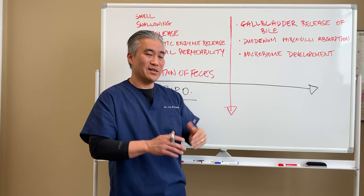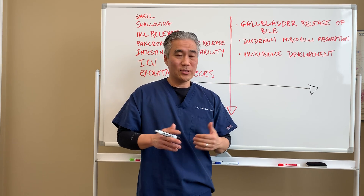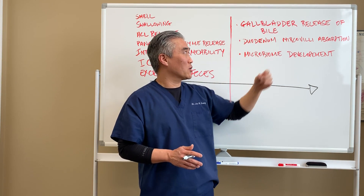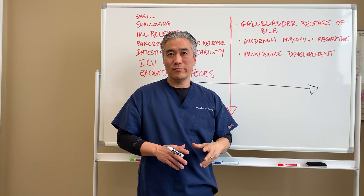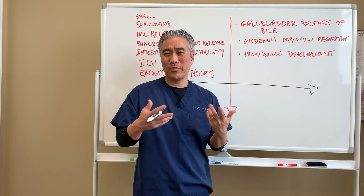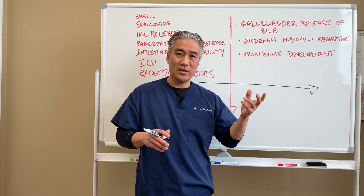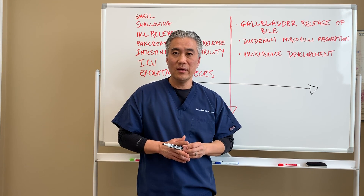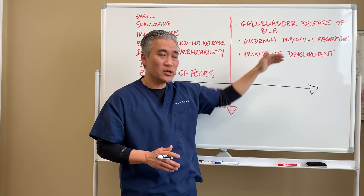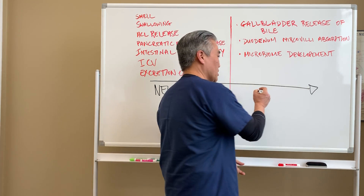Consider a patient with insulin resistance and diabetes who eats very poorly. They have poor gut microbiome and atrophied microvilli. They burp up fish oil and can't absorb it. Despite taking 5,000 units of vitamin D, their vitamin D blood levels remain low. When we look at this patient through a clinical lens — with gallbladder, microvilli malabsorption, and microbiome issues — we identify this as a metabolic patient.